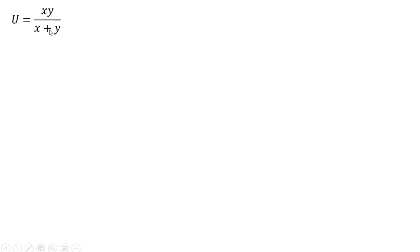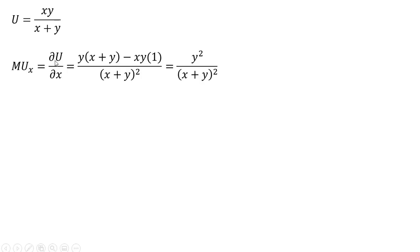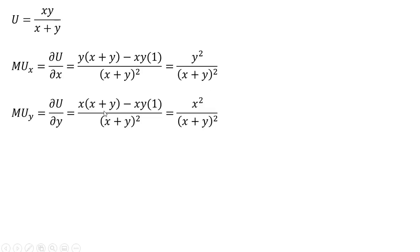Here's our utility function. First, we'll get the marginal utility of good X. Using the quotient rule, we get Y squared over (X plus Y) squared. Then we get the marginal utility of good Y — also using the quotient rule — and we get X squared over (X plus Y) squared.